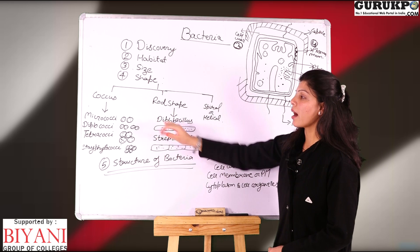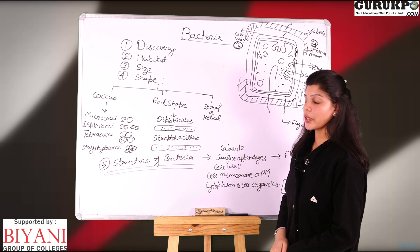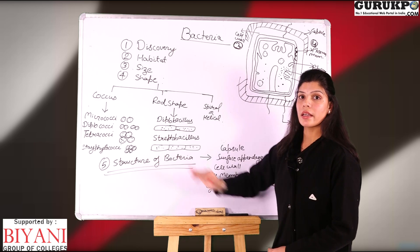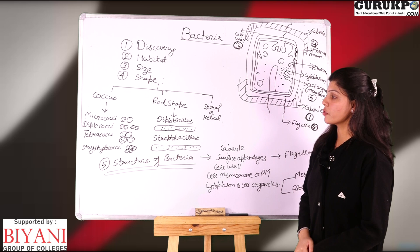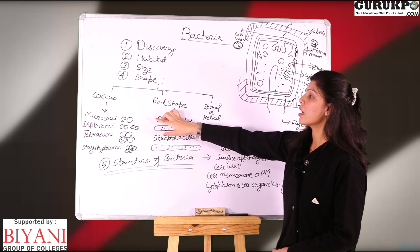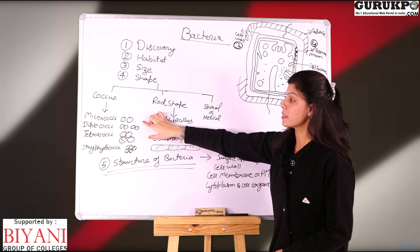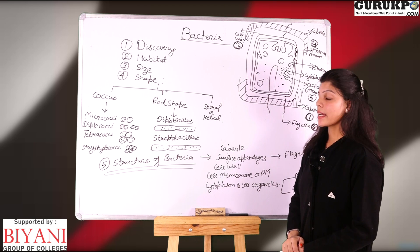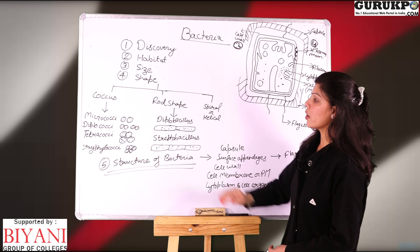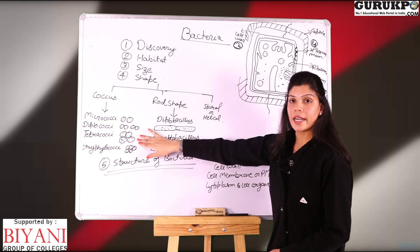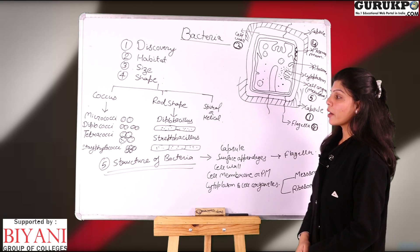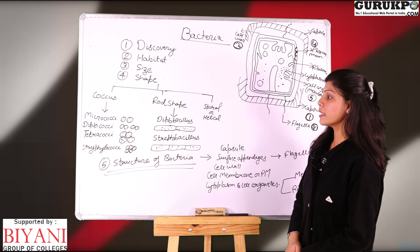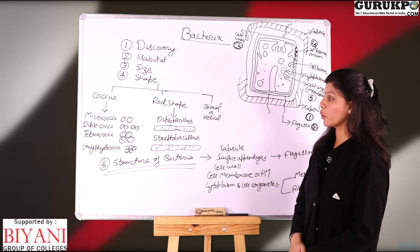Coccus shape bacteria are round shape bacteria and they are non-motile. Their main categories are: first is micrococcus — small and rounded structures present as single cells; second is diplococci — when bacterias are present in pairs; third is tetracocci — when bacterias are present in groups of four; and fourth is staphylococci — when bacterias are present in clusters.